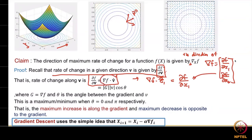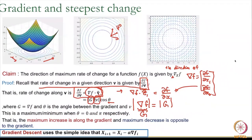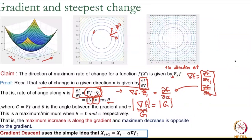Del f / del v = grad f · v. Now grad f is a vector with a magnitude and a direction. If we call grad f as capital G, then taking the dot product of two vectors gives |G| · |v| · cos θ, where θ is the angle between the gradient and v. So the amount of change you face in direction v is the gradient magnitude times cos θ. Maximum increase is along the gradient and maximum decrease is opposite to the gradient.